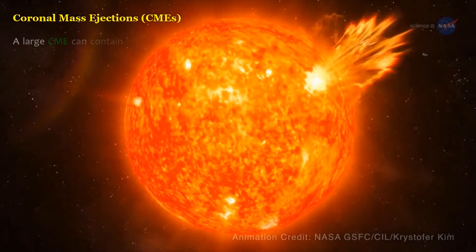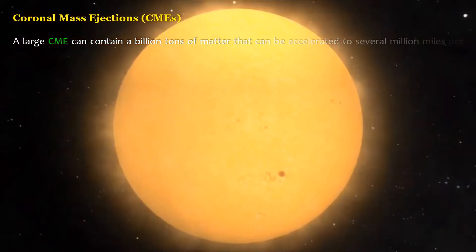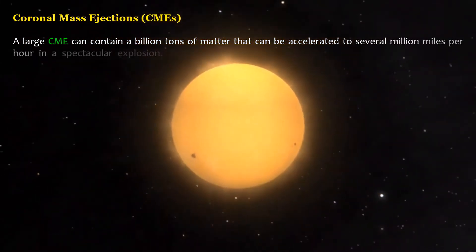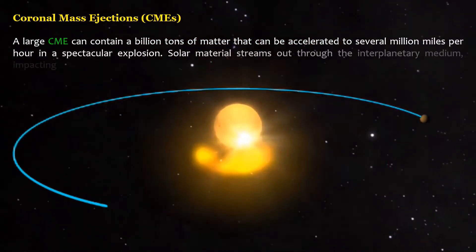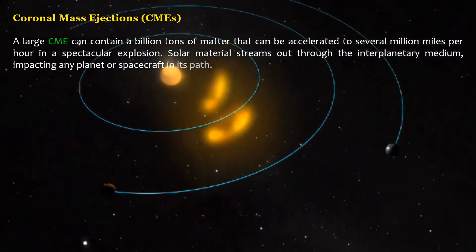A large CME can contain a billion tons of matter that can be accelerated to several million miles per hour in a spectacular explosion. Solar material streams out through the interplanetary medium, impacting any planet or spacecraft in its path.